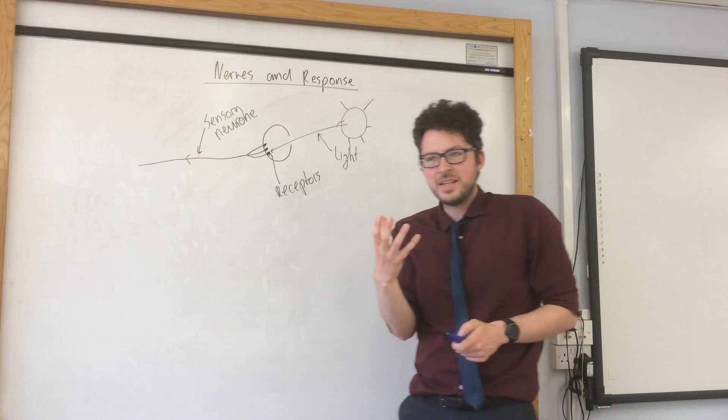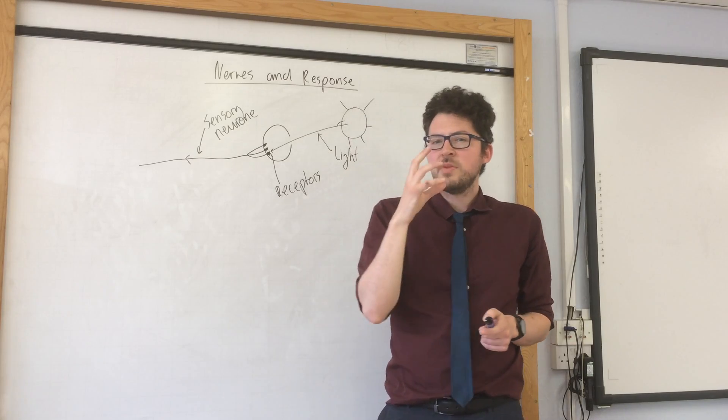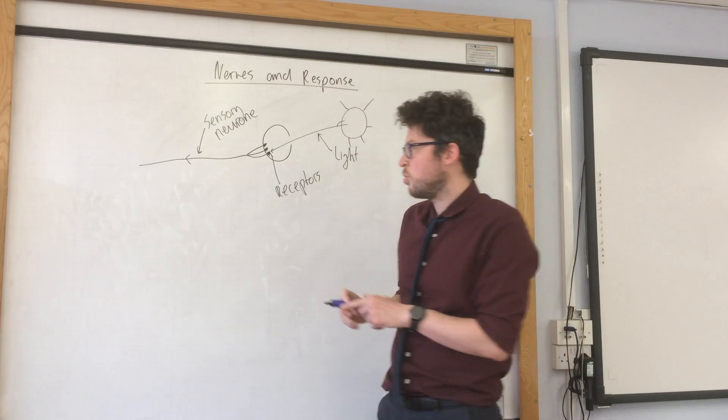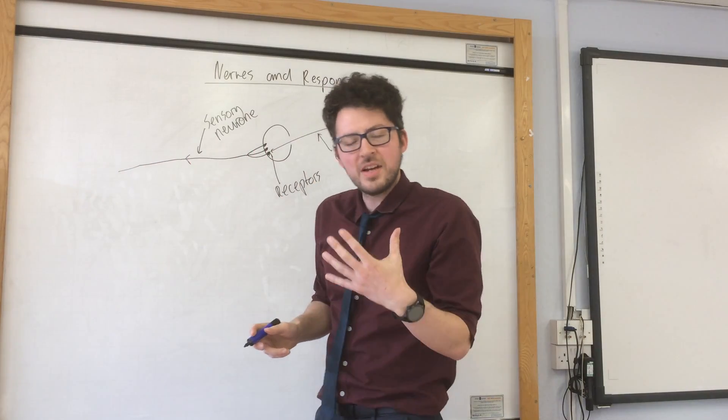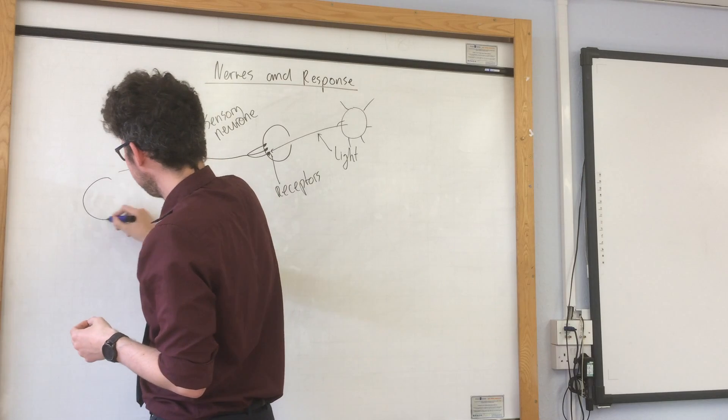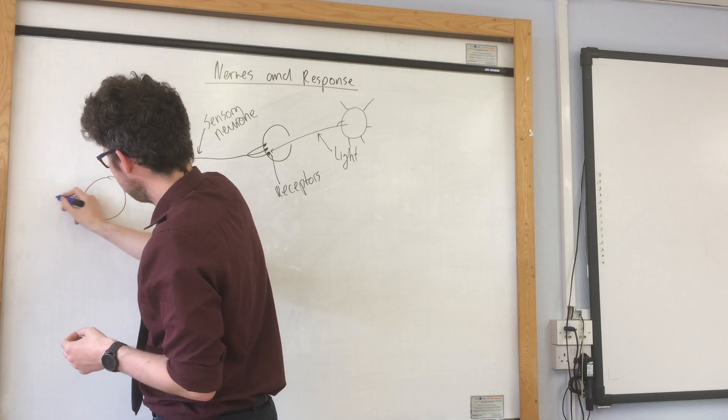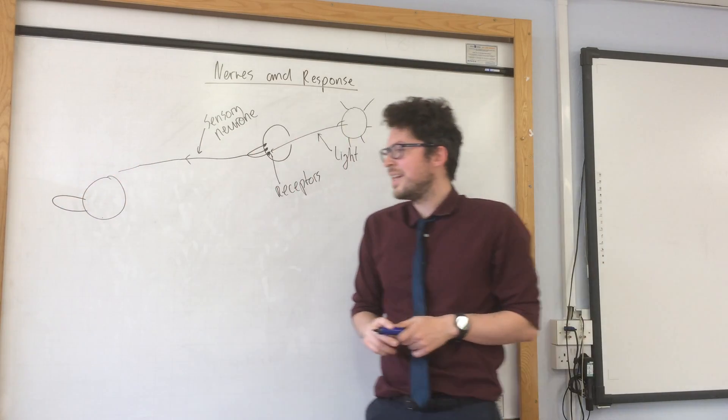Now the next step is it's going to reach our central nervous system which is made up of the brain and the spinal cord. So I'm going to draw a very simple diagram of the brain and spinal cord. That is our brain and spinal cord.